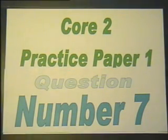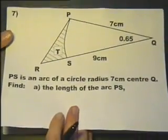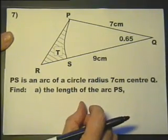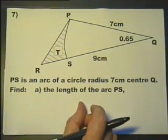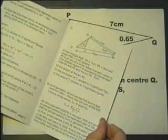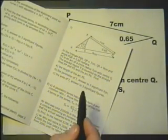Core 2 practice paper number one, question number seven. To get the best value from this past paper, you should work through the exam paper before you look at my answers and solutions. Also, you should have the exam paper with you at the same time.